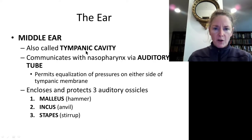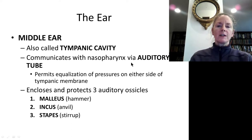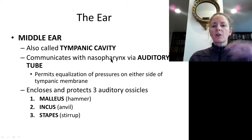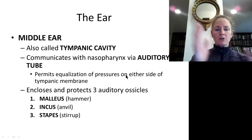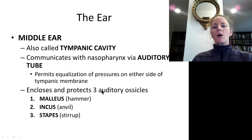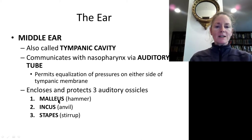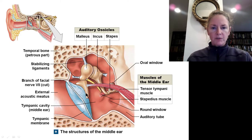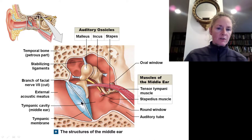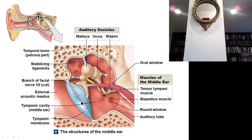The middle ear is also called the tympanic cavity. It has a passageway to the nasopharynx via the auditory tube, allowing pressure equalization on both sides. We have our auditory ossicles: the malleus (hammer), the incus (anvil), and the stapes (stirrup). The malleus is directly connected to the tympanic membrane.